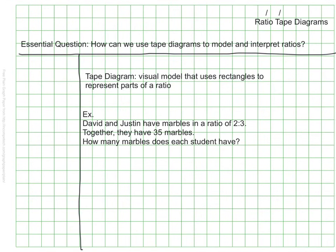I'm going to start with this example where we have two students and we know the ratio of marbles between them. David clearly has two marbles to every three marbles that Justin has. However, in total we know that they have 35 marbles — they don't just have the five that we see. The question is: how many marbles does each student have? I'm going to show you how to visually represent this with a tape diagram.